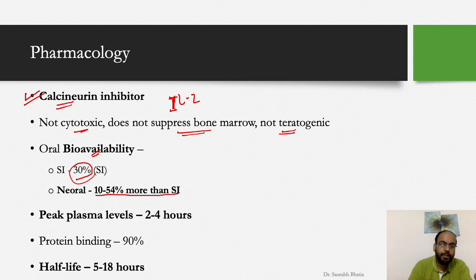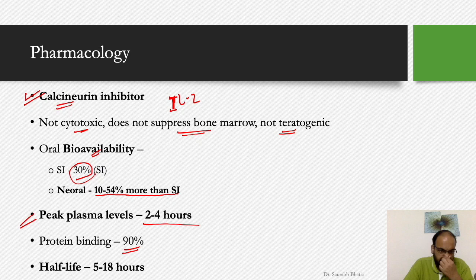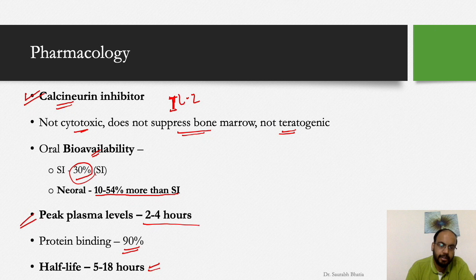Bioavailability for Sandimmune is around 30%, and Neoral is 10–54% more bioavailable than Sandimmune — not 10–54% absolute. Peak plasma levels are reached in 2–4 hours after oral consumption. Cyclosporine is 90% protein bound and the half-life ranges from 5 to 18 hours.